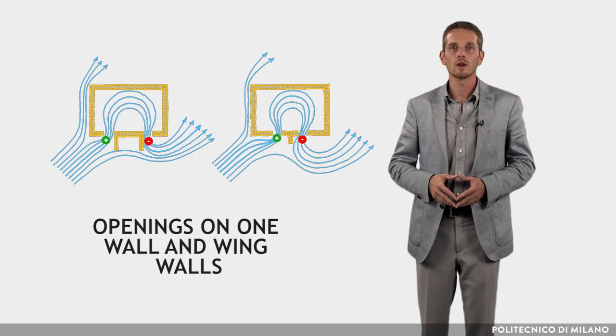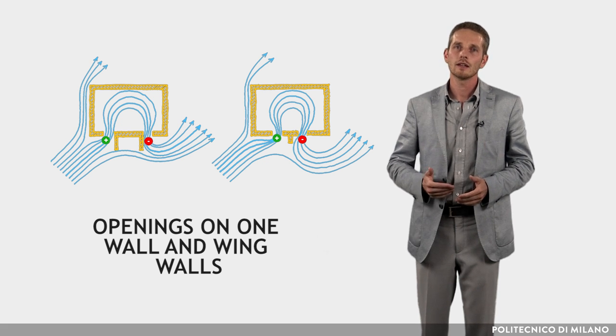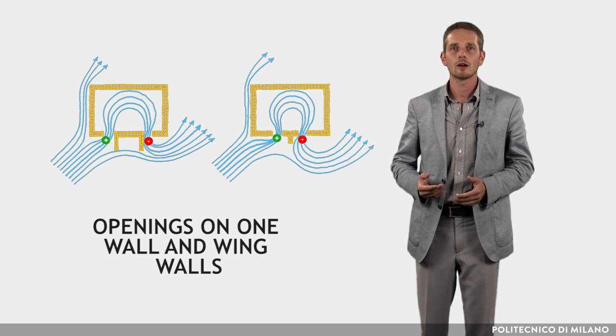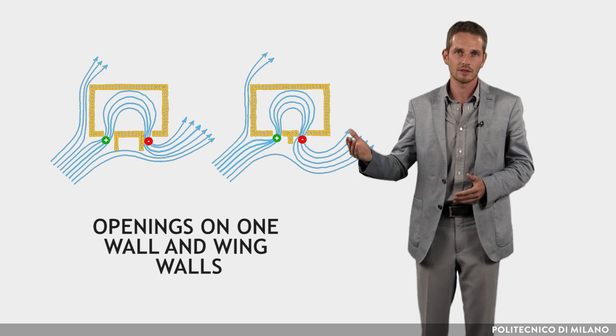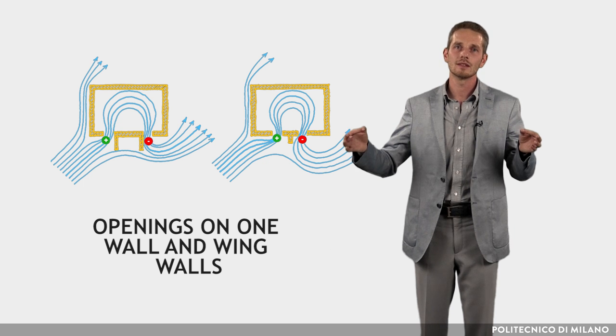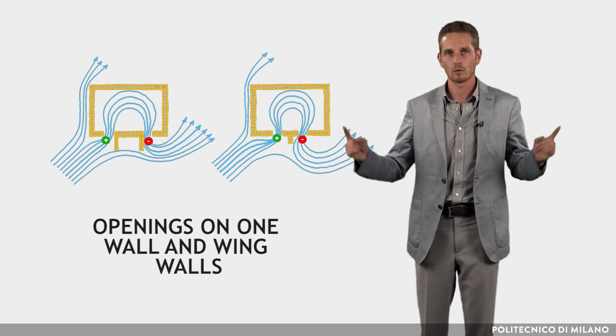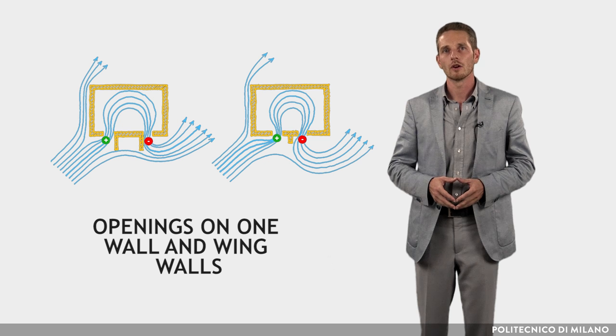In fact, if the window is on the windward side, the available wind velocity is about 10% of the outdoor velocity at points up to a distance one-sixth of the room width. Beyond this, the velocity decreases rapidly.